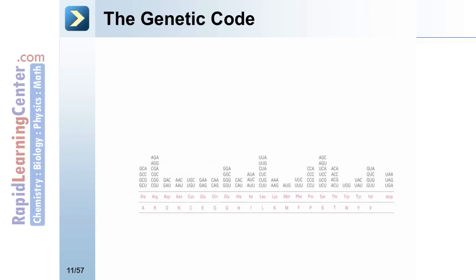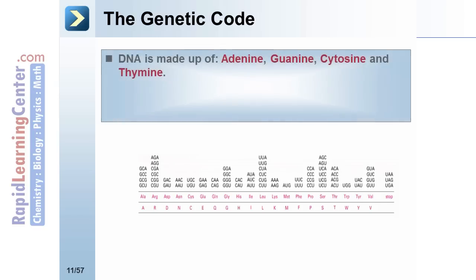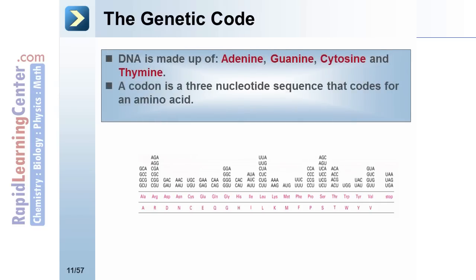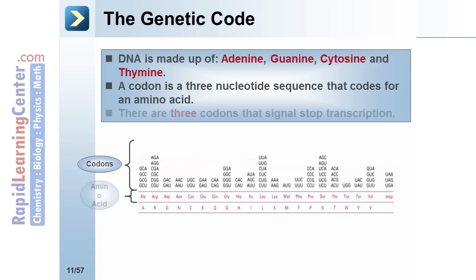The genetic code. DNA is made up of adenine, guanine, cytosine, and thymine. A codon is a three-nucleotide sequence that codes for an amino acid. Notice some codons have only one — for instance, tryptophan is UGG. Some, like arginine, have many more codons that code for it. There are three codons that signal stop: UAA, UAG, and UGA. Become familiar with these stop codons.